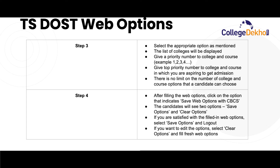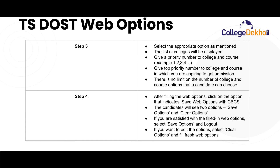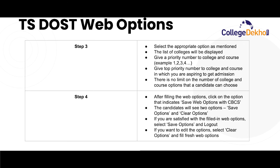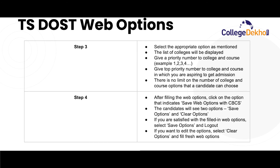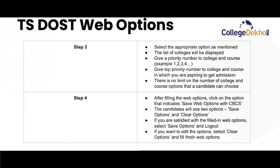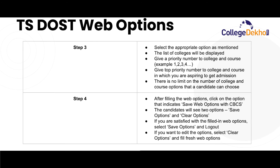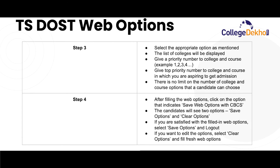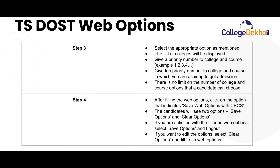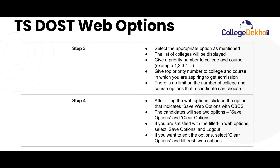After filling the web options, click on the option that indicates save web options with CBCS. Two options will be shown: save options and clear options. If you are satisfied with the filled-in web options, select save options and log out. If you want to edit the options, select clear option and fill fresh web options.